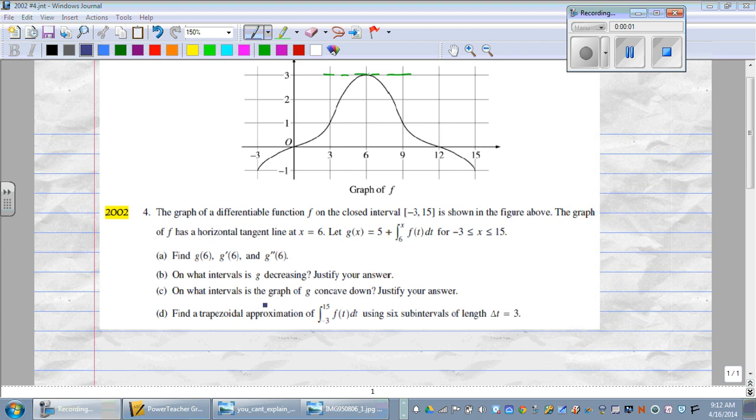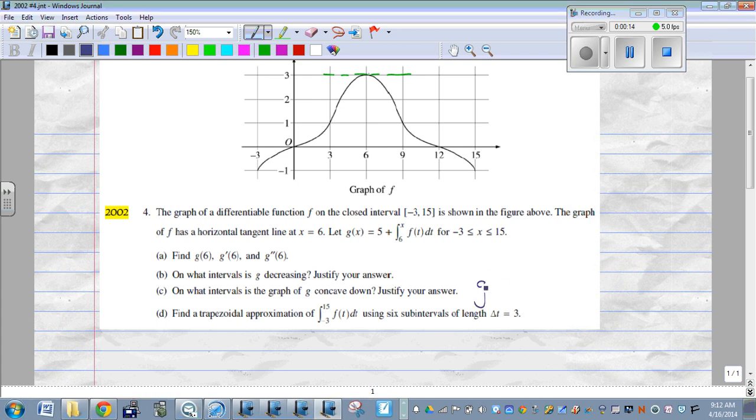In part C, on what intervals is the graph of G concave down? Justify your answer. So how do we know it's going to be concave down? Second derivative is less than zero. In order to be concave down, the second derivative has to be less than zero.